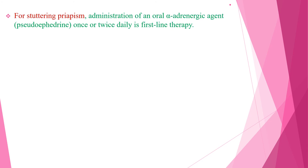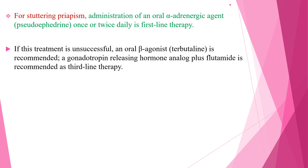For stuttering type of Priapism, administration of an oral alpha-adrenergic agent such as pseudoephedrine once or twice daily is first-line therapy. If this is unsuccessful, an oral beta-agonist such as terbutaline is recommended as second-line therapy. A gonadotropin-releasing hormone analog plus flutamide is recommended as third-line therapy. In summary: first-line is pseudoephedrine, second-line is terbutaline, and third-line is GnRH analog with flutamide.